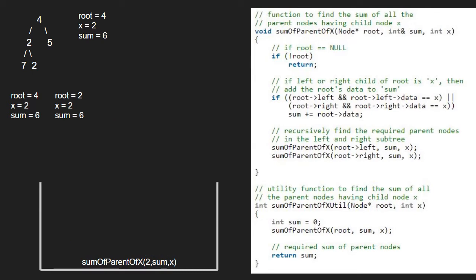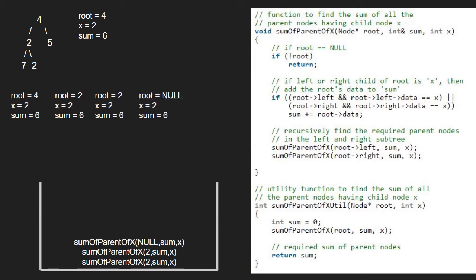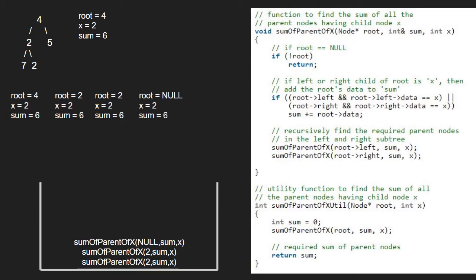Execution for root 2 is resumed and now we pass the right child of 2, which is also 2, so root will point to 2. As root is not null, we check if the node 2 at level 3's left or right is 2. As it is not true, the second if condition does not get satisfied and we pass the left child, which is null. Since root is null, we return. Next we pass the right child of 2 at level 3, which is also null. Again as root is null, we return and finish execution for that node 2.